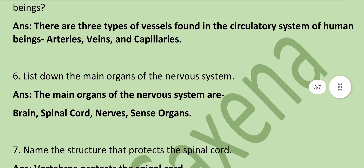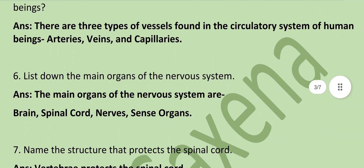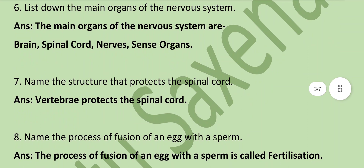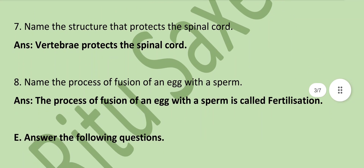List the main organs of the nervous system: brain, spinal cord, nerves, and sense organs. Name the structure that protects the spinal cord: vertebrae protect the spinal cord. Name the process of fusion of an egg with a sperm: this process is called fertilization.